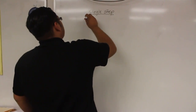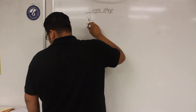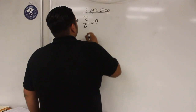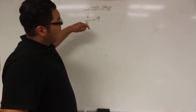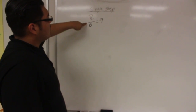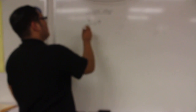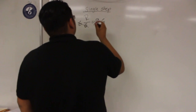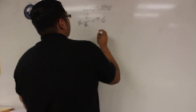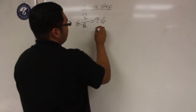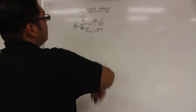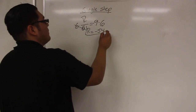So it's a single-step problem, and the first problem would be r minus 6 equals 9, negative 9. So what you want to do first is multiply by 6, so you can do the opposite of division on both sides. 6 times 6 would cancel, and it's a negative times a positive, so that would give you a negative. So 9 times 6 would be 54, but since it's negative, that would be negative 54. So r equals negative 54, and this is your answer.